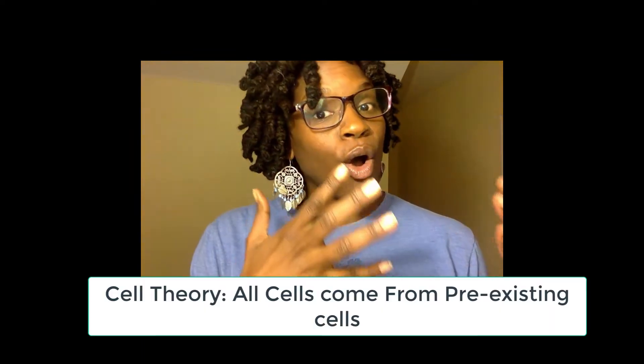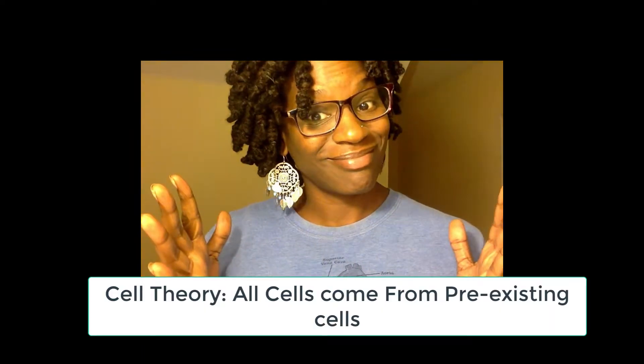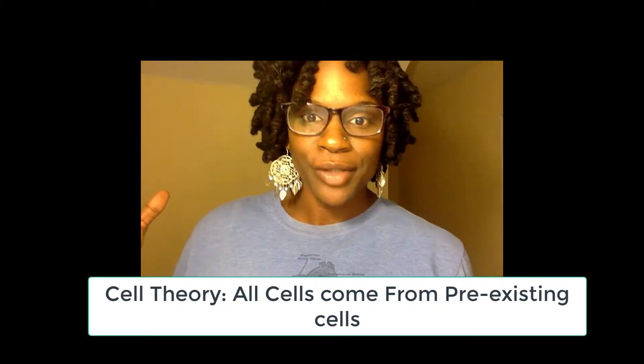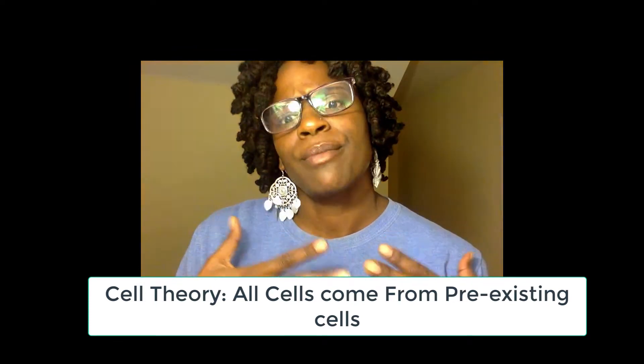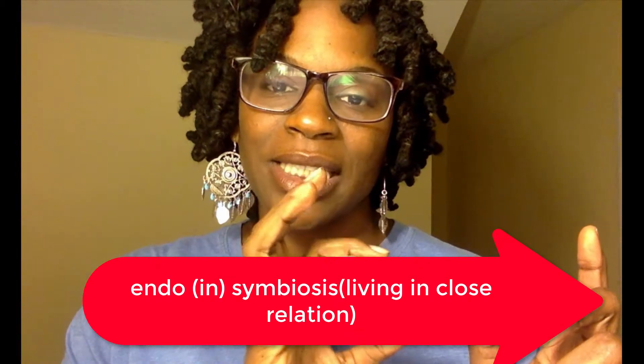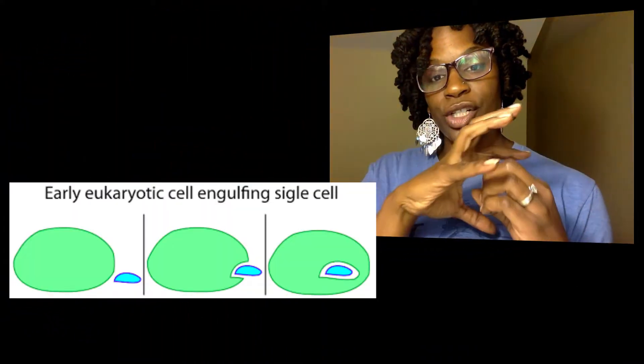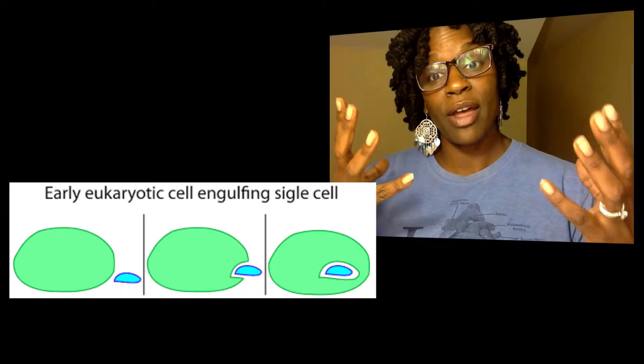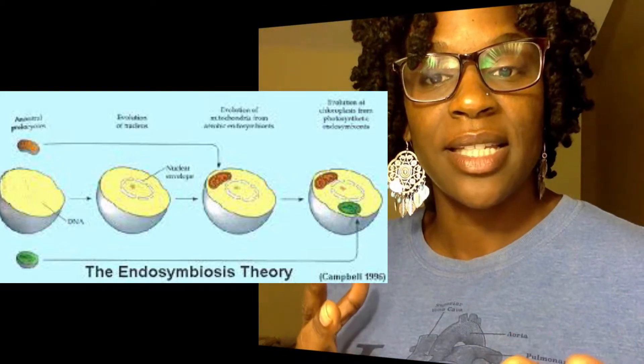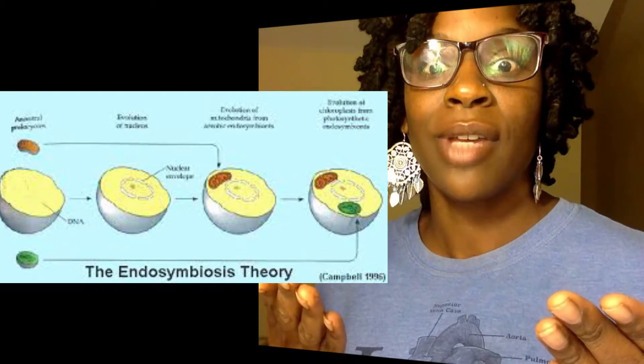The theory of endosymbiosis is the idea that all cells come from pre-existing cells. Billions of years ago everything was prokaryotic. It's thought that chloroplasts and mitochondria were their own prokaryotic cells, and they were endosymbiotically — 'endo' meaning in, 'symbiotic' meaning a relationship — engulfed by a larger cell. Due to evolution, they stayed inside that cell, creating the eukaryote.